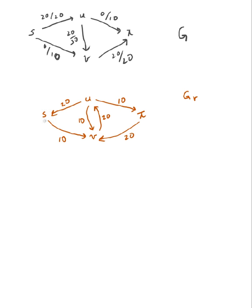The next step is to find an augmenting path from S to T. I could go S, V, U, T. You find the augmenting path on the residual graph and look at the bottleneck. The capacities are 10, 20, 10, so the bottleneck will be 10.